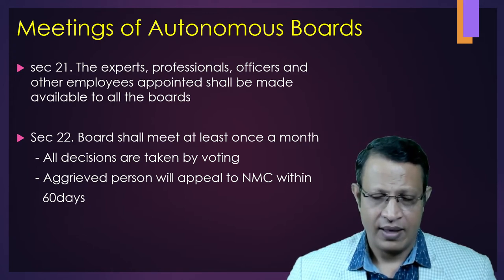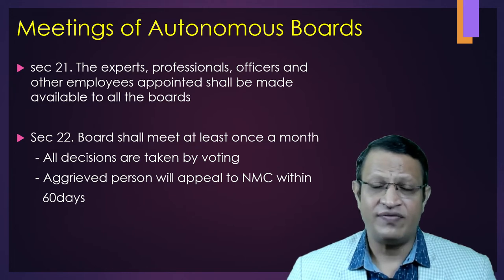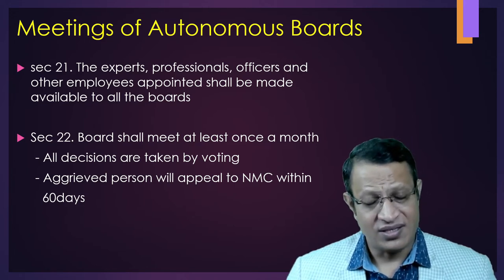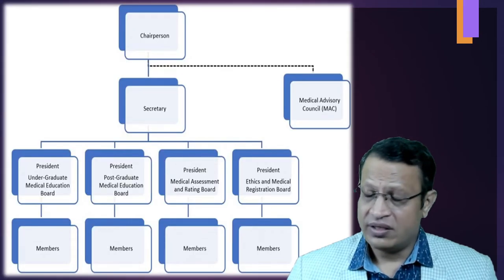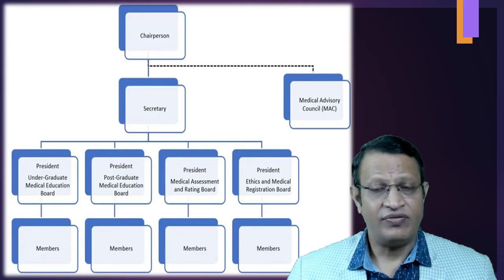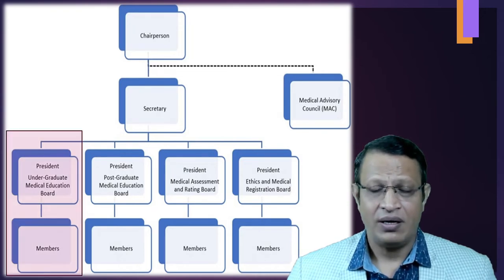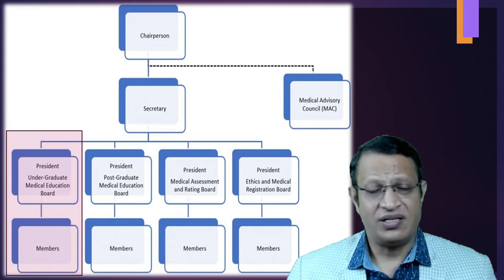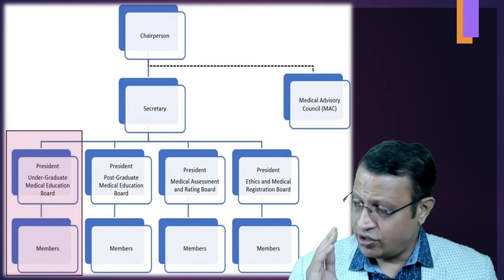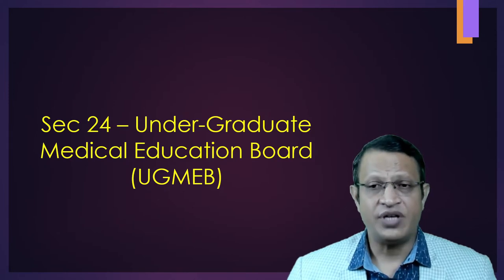Each autonomous board except the Ethics and Medical Registration Board shall have an advisory committee of experts. For the EMRB, there will be an expert ethics committee that can be given power to function as required, whereas for the other three boards, advisory committees can only advise. Section 21 states that experts and professionals appointed under the NMC Act will be available across all boards. Section 22 states boards shall meet at least once a month, with all decisions taken by voting. A person aggrieved by a board decision can appeal to the National Medical Commission within 60 days.